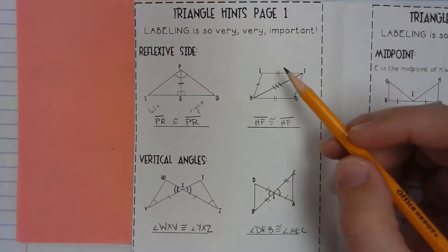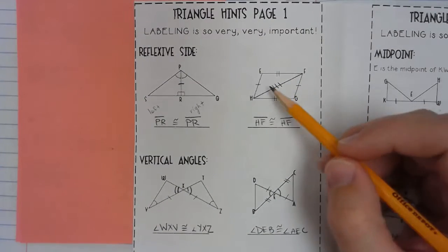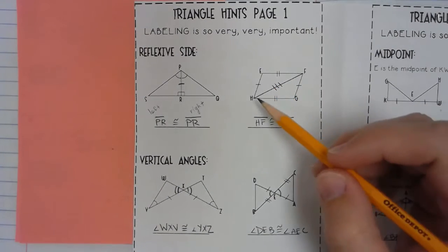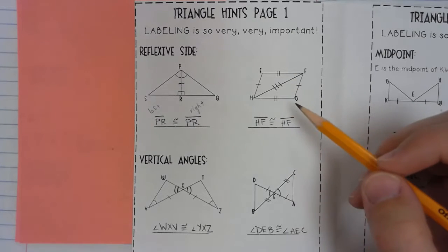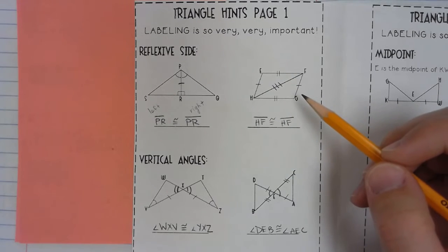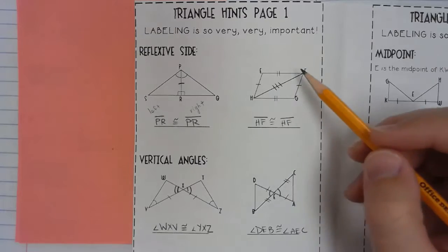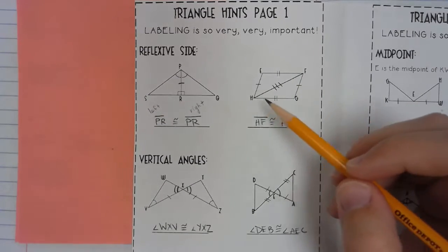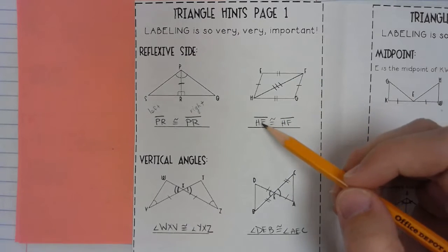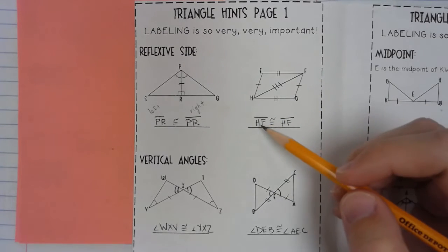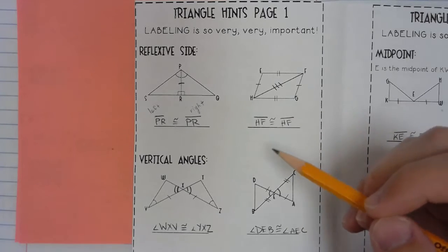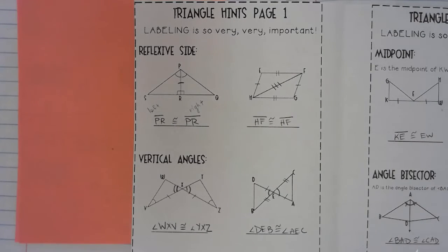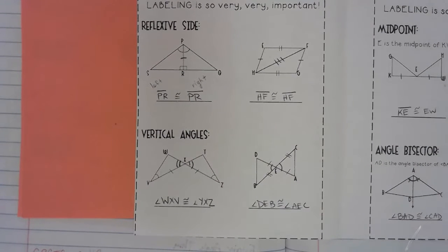Same thing in this next triangle. This time I've got what looks like a four-sided figure, but there's a diagonal drawn that cuts it into two triangles: triangle HEF and triangle FGH. In the middle, this diagonal is a side they both share — segment HF. So I could say segment HF is congruent to segment HF, and that's the reflexive side. If two triangles have a reflexive side, they for sure have a pair of corresponding parts.